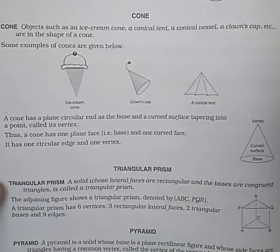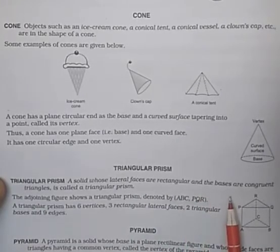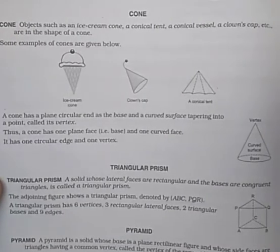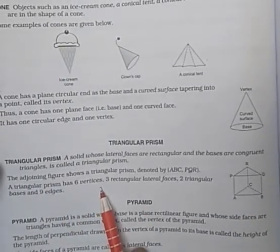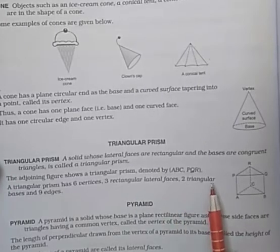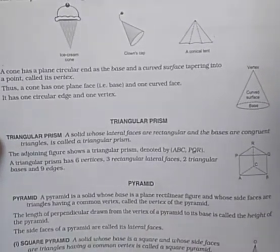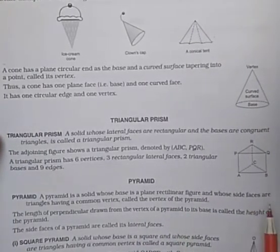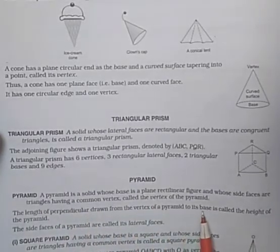Triangular prism: a solid whose lateral surfaces are rectangular and whose bases are congruent triangles is called a triangular prism. A triangular prism has six vertices, three rectangular lateral faces, two triangular bases, and nine edges. A pyramid is a solid whose base is a plane rectilinear figure and whose side faces are triangular having a common vertex, called the vertex of the pyramid.